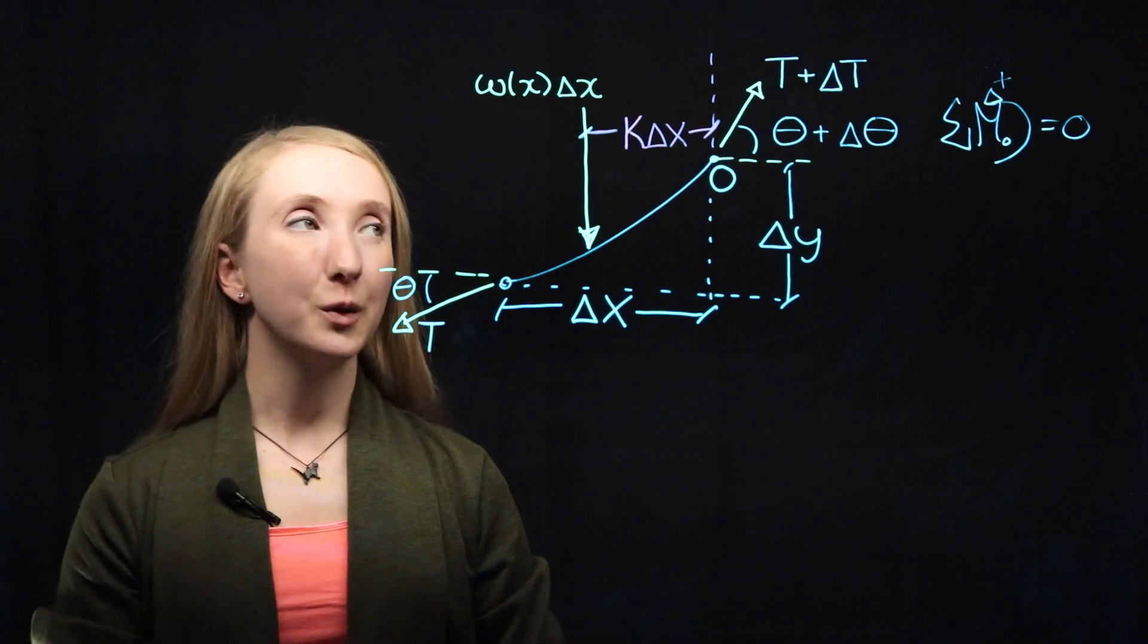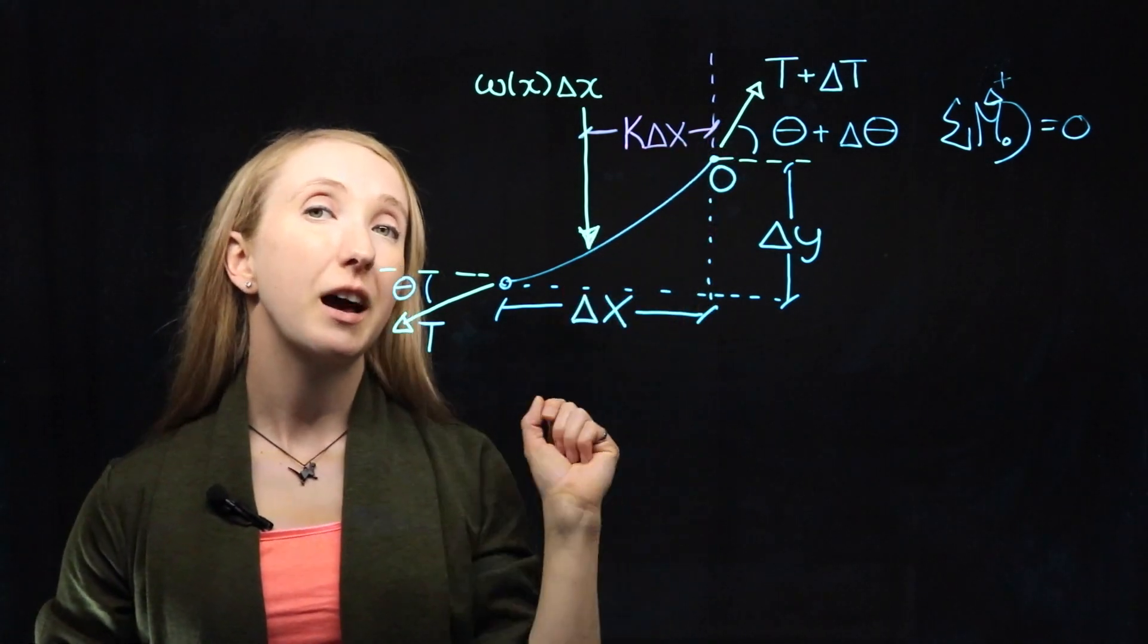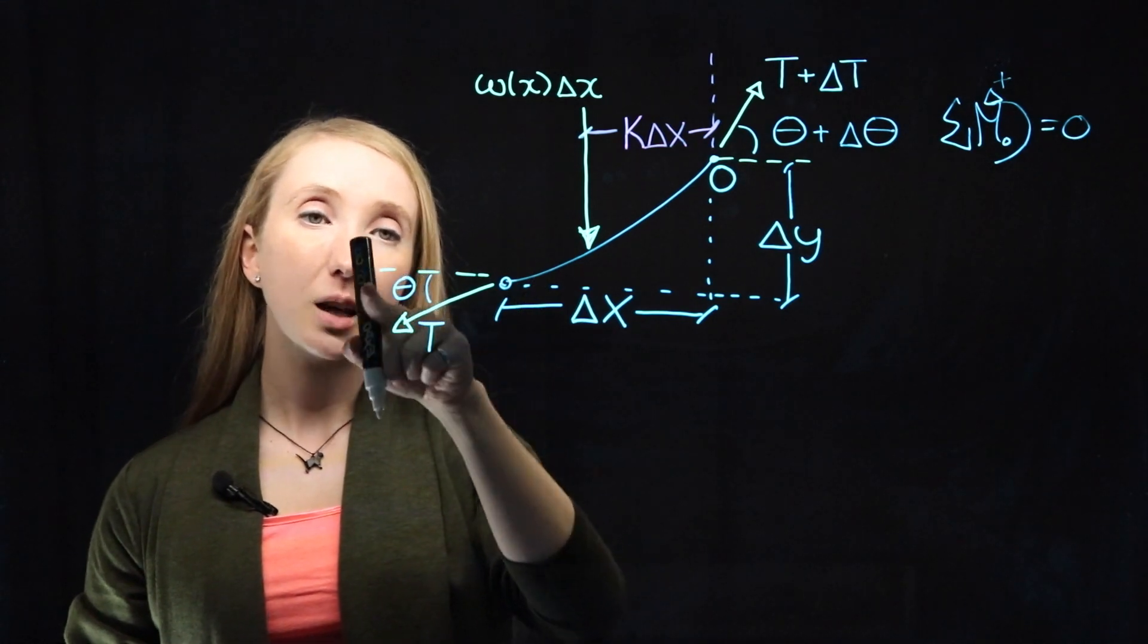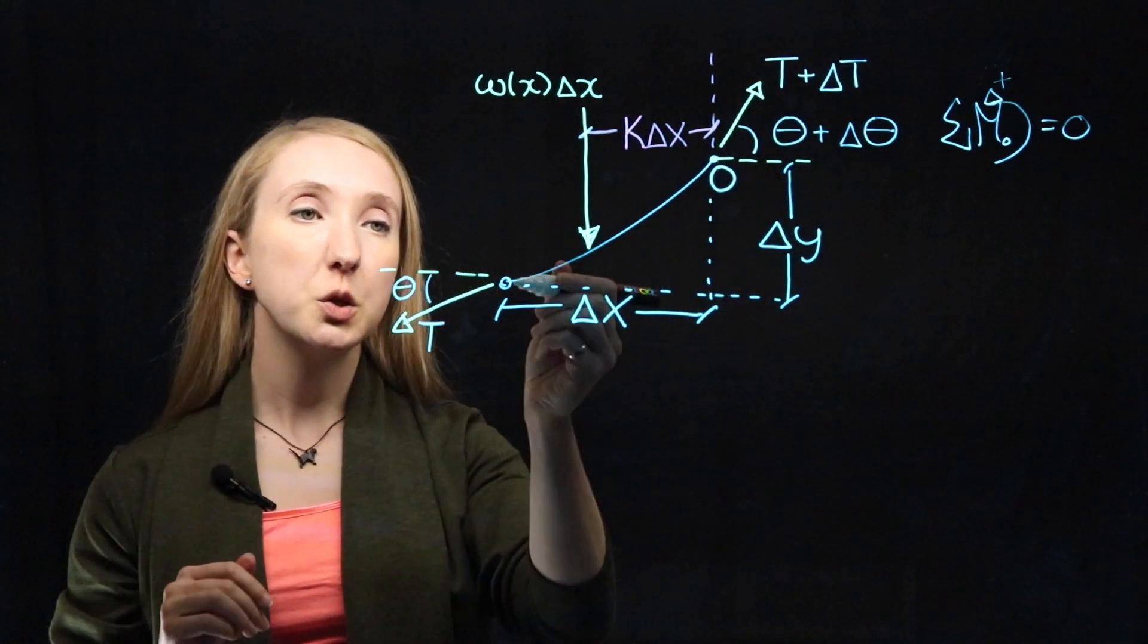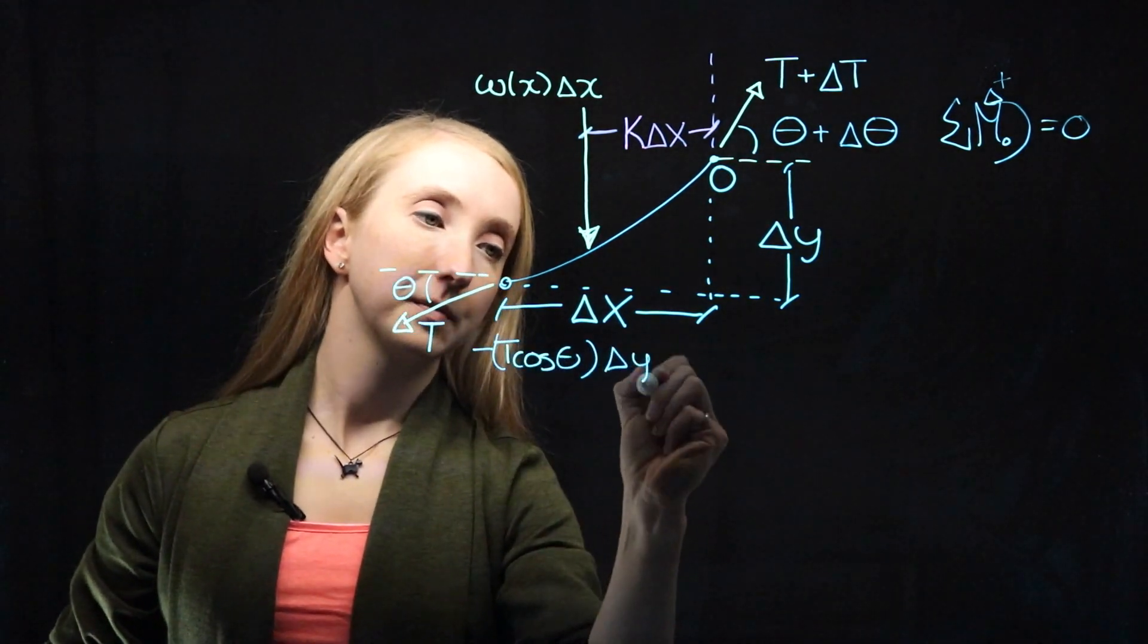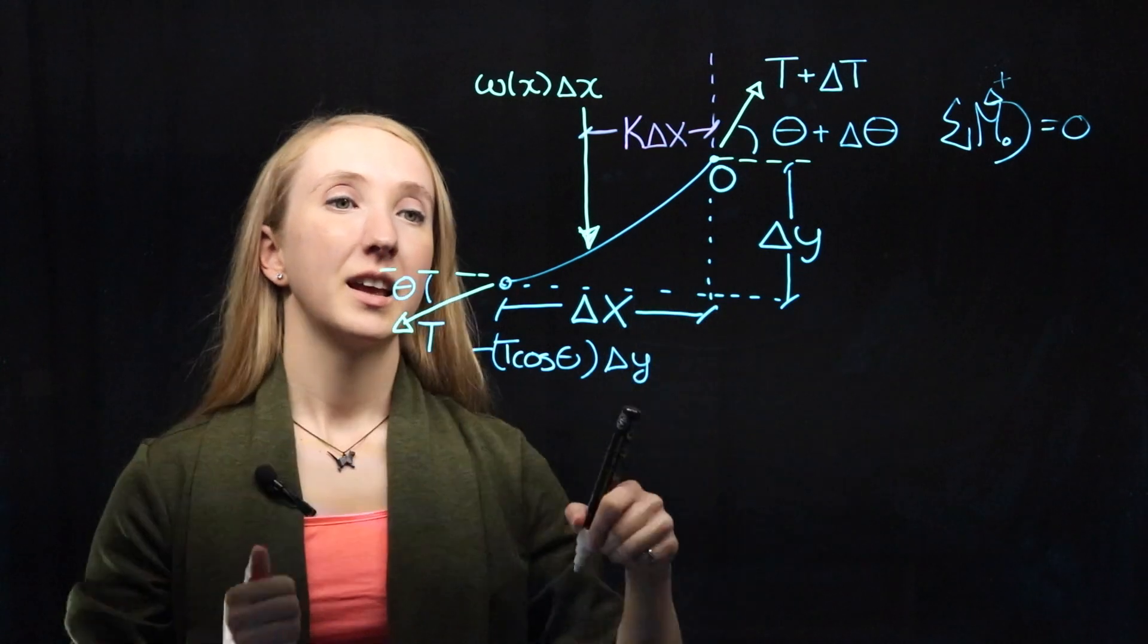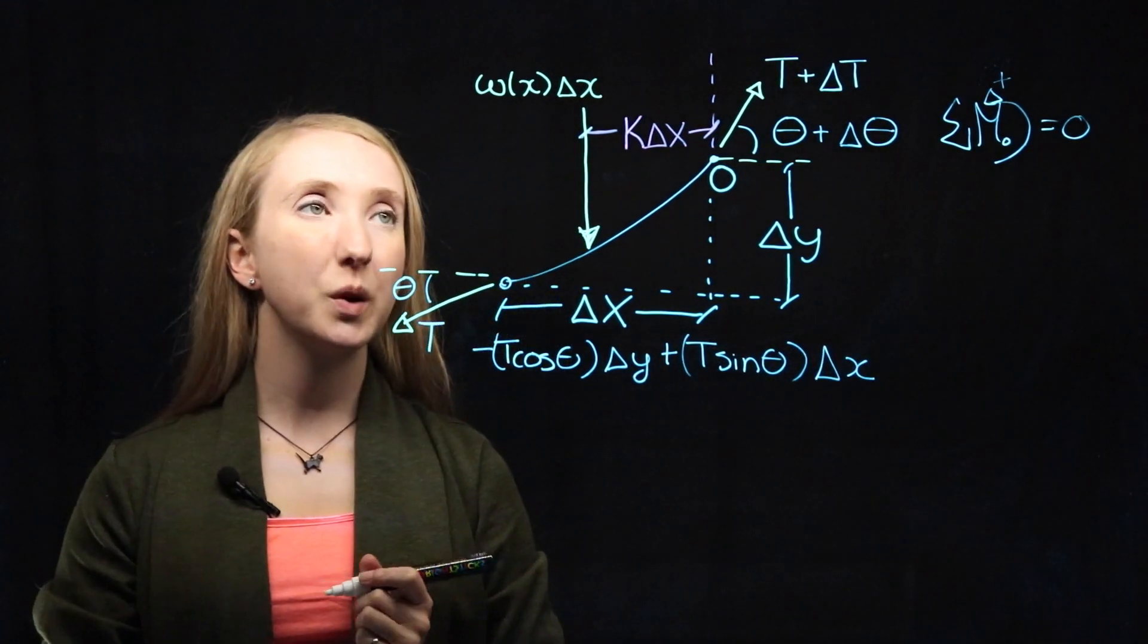For our last equilibrium equation, we're going to take the moments about our origin, point O. Since the tension at this end is acting at the origin, point O, we won't have to consider it. We'll only have the X and Y component of this tension and our applied force. So the X component of the tension at this end is equal to T times cos theta, and it acts at a perpendicular distance from our origin of delta Y. And if we were to pull in that direction, we would create a moment in the negative direction. In the Y direction, we have the vertical component of this tension, which is T sine theta, and it acts at a perpendicular distance from our origin of delta X. And pulling in that direction would create a positive moment.